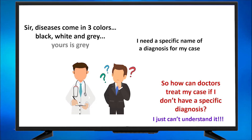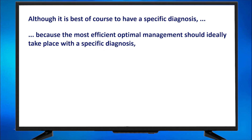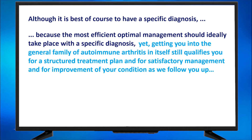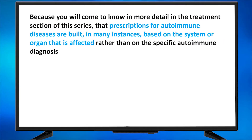The patient might then tell me: 'So how can doctors treat my case if I don't have a specific diagnosis? I just can't understand it.' Although it is best, of course, to have a specific diagnosis — because the most efficient optimal management should ideally take place with a specific diagnosis — yet getting you into the general family of autoimmune arthritis in itself still qualifies you for a structured treatment plan, satisfactory management, and improvement of your condition as we follow you up. Because prescriptions for autoimmune diseases are built in many instances based on the system or organ that is affected rather than on the specific autoimmune diagnosis.